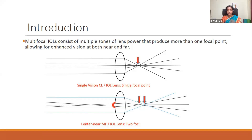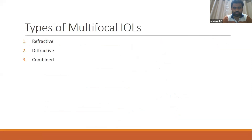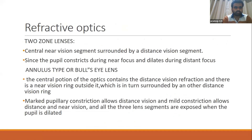Multifocal IOLs consist of multiple zones of lens power that produce more than one focus, allowing for enhanced vision at both near and far distances. There are two types: refractive and diffractive, which can also be combined. The optical principle behind refractive IOLs involves different zones designed to address multiple focal distances.